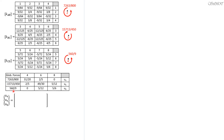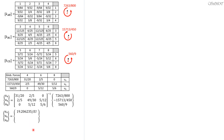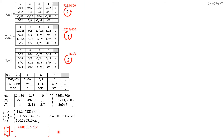Solving for U4, U6, U8 as the inverse of the 3x3 stiffness matrix times the force matrix. After multiplication using a calculator, we get: U4 = 19.206235 over EI, U6 = negative 51.727286 over EI, U8 = 100.530310 over EI. Since EI for BC is 200 times 10 to the 6 times 200 gigapascals, that gives 40,000 kilonewton meter squared. Dividing all displacements by 40,000 gives values in radians: theta B = 4.80156 times 10 to the negative 4 radians, and corresponding values for theta C and theta D.